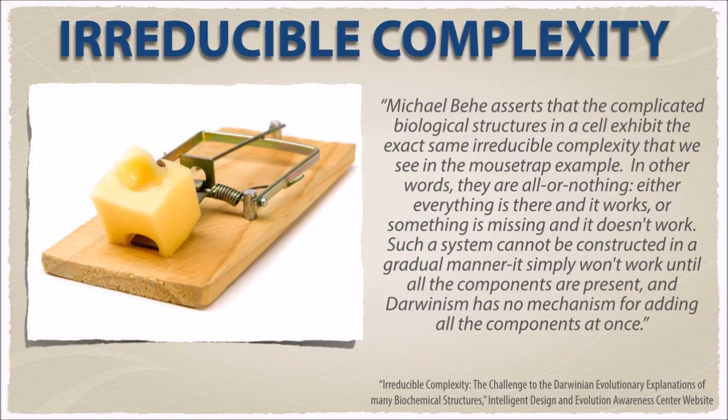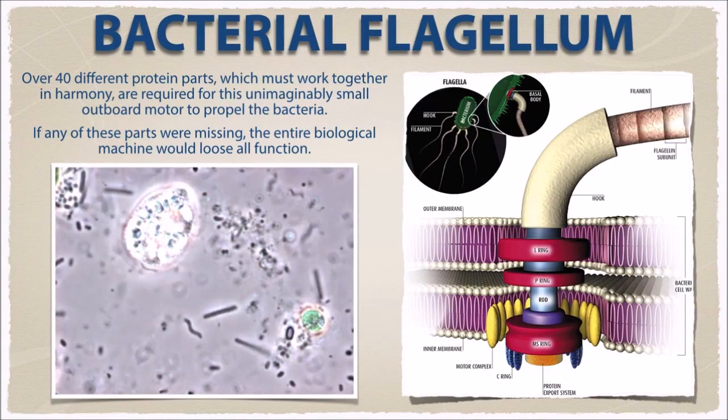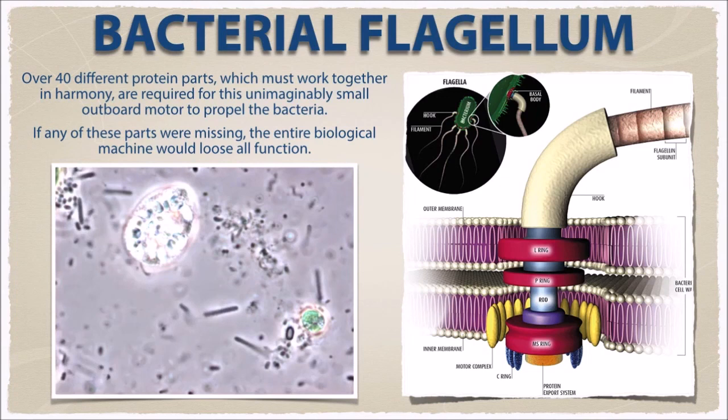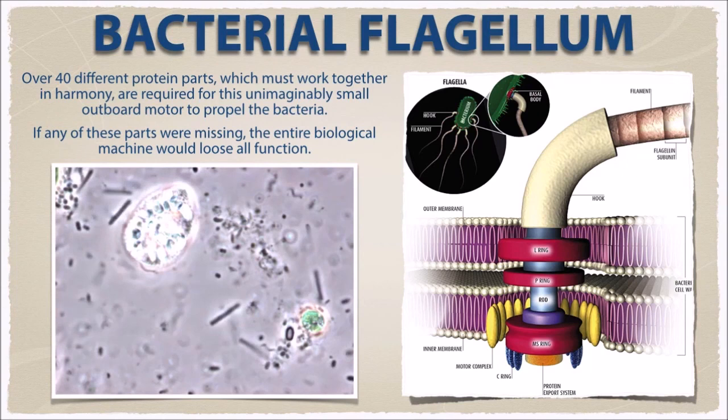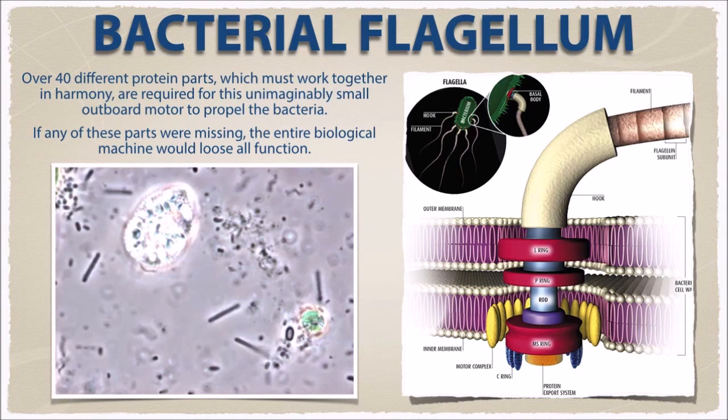The idea of slow, gradual, incremental change adding up to this kind of biological cellular machine just doesn't make sense. The bacterial flagellum has over 40 different protein parts which all must work together in harmony and are required for this unimaginably small outboard motor to propel the bacteria through the cellular fluid. And if any of these parts were missing, the entire biological machine would lose all function.